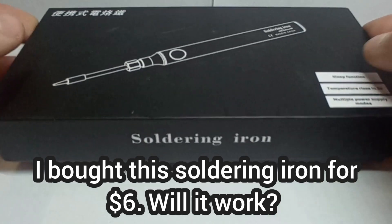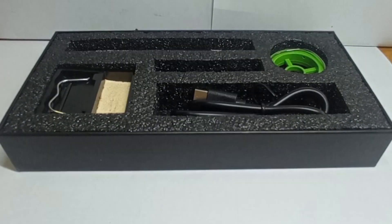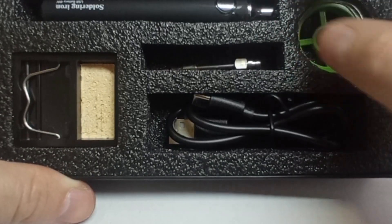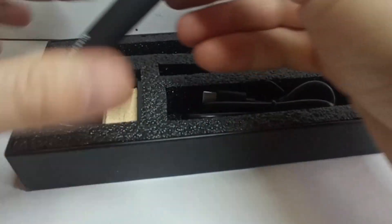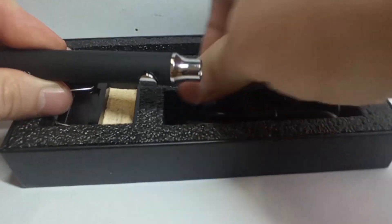First up, let's take a look at what comes in the box. Inside, we have the soldering iron pen itself, a USB charging cable, soldering iron stand, sponge, solder and a user manual. Everything you need to get started.